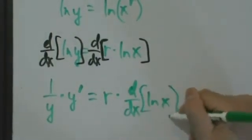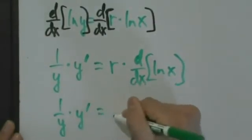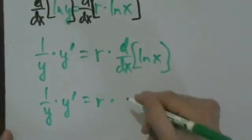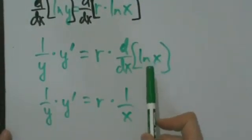So what we have now is 1 over y times y prime equals r times 1 over x. Derivative of natural log of x is just 1 over x.